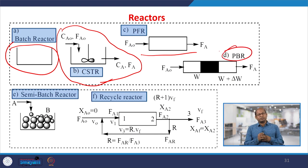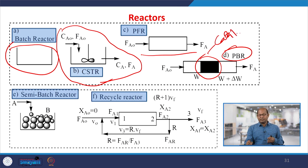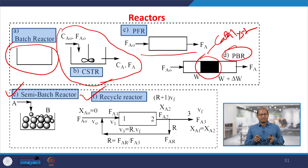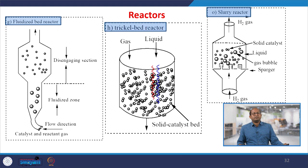Similarly, a packed bed reactor: packing catalyst is placed in packed form inside the reactor. Once reactants pass through the catalyst bed, we get the product. A semi-batch reactor and a recycle reactor are also shown — here is the schematic diagram of the recycle reactor. There is also the fluidized bed reactor. Today we have discussed up to this, and then we will discuss more details about other reactor types, their design equations, and related topics for individual reactors.